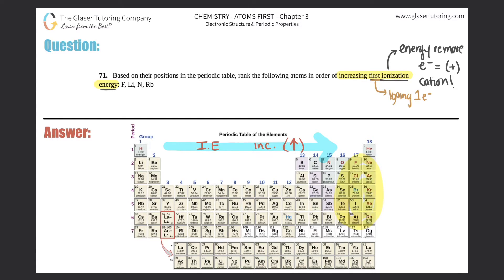As opposed to the elements on this side. The group trend: as you go from top to bottom, turns out that ionization energy will decrease, so it will go down.